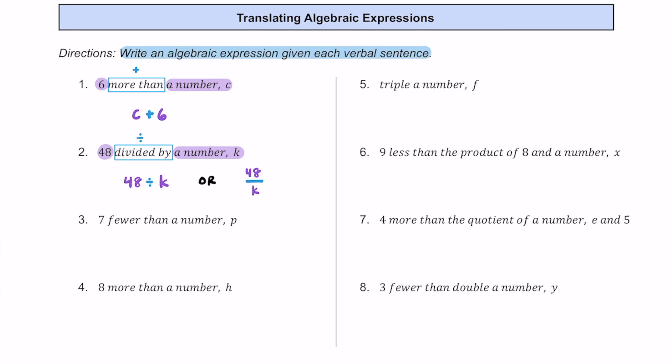For number three, we have seven fewer than a number p. Seven is one of our terms and p is our second term. The phrase 'fewer than' means we are going to be subtracting. If it's seven fewer than p, then we should be taking away seven, so we write p minus seven.